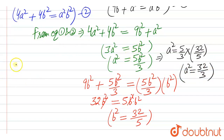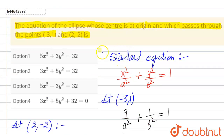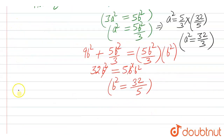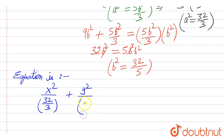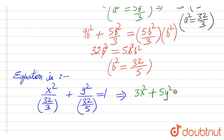Now we can find the equation easily. The standard equation of the ellipse is x² divided by a², where a² is 32/3, plus y² divided by b², that is 32/5, equals 1. This becomes 3x² + 5y² = 32.